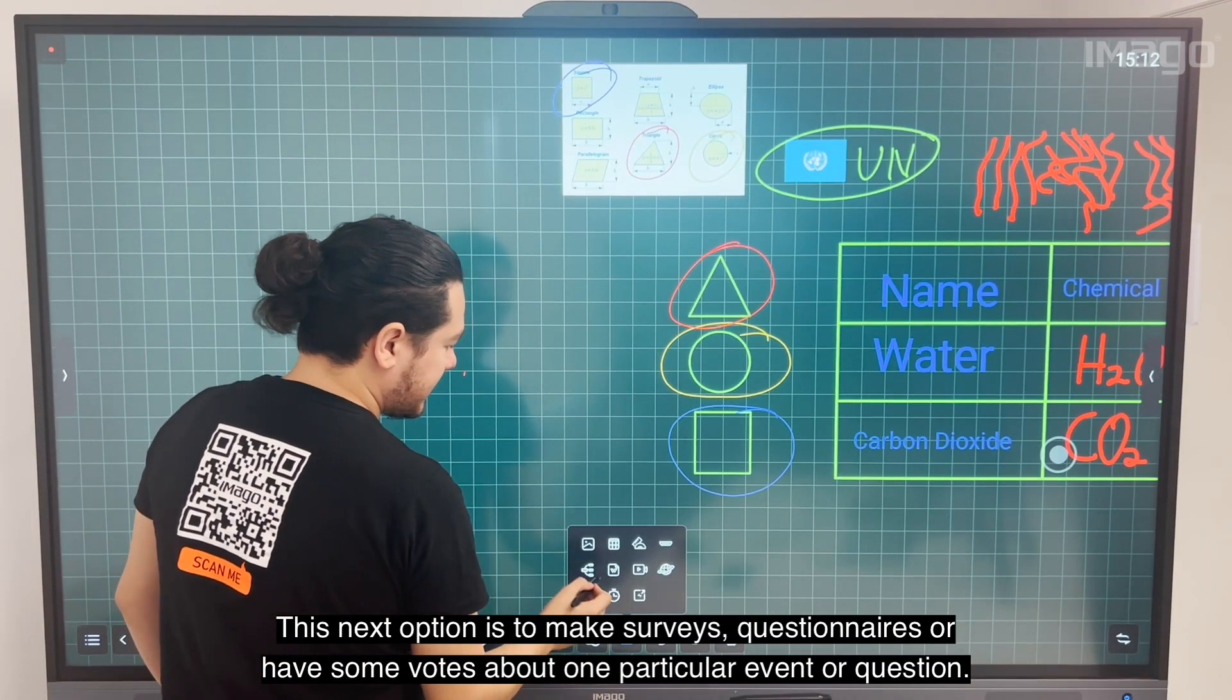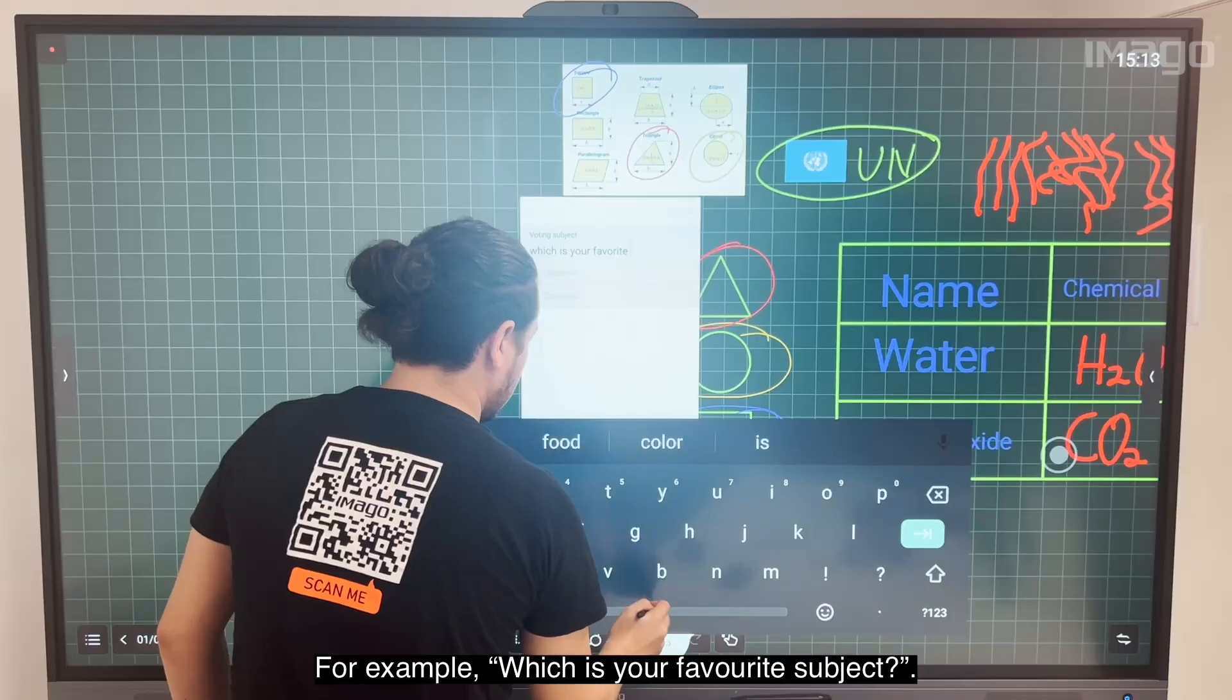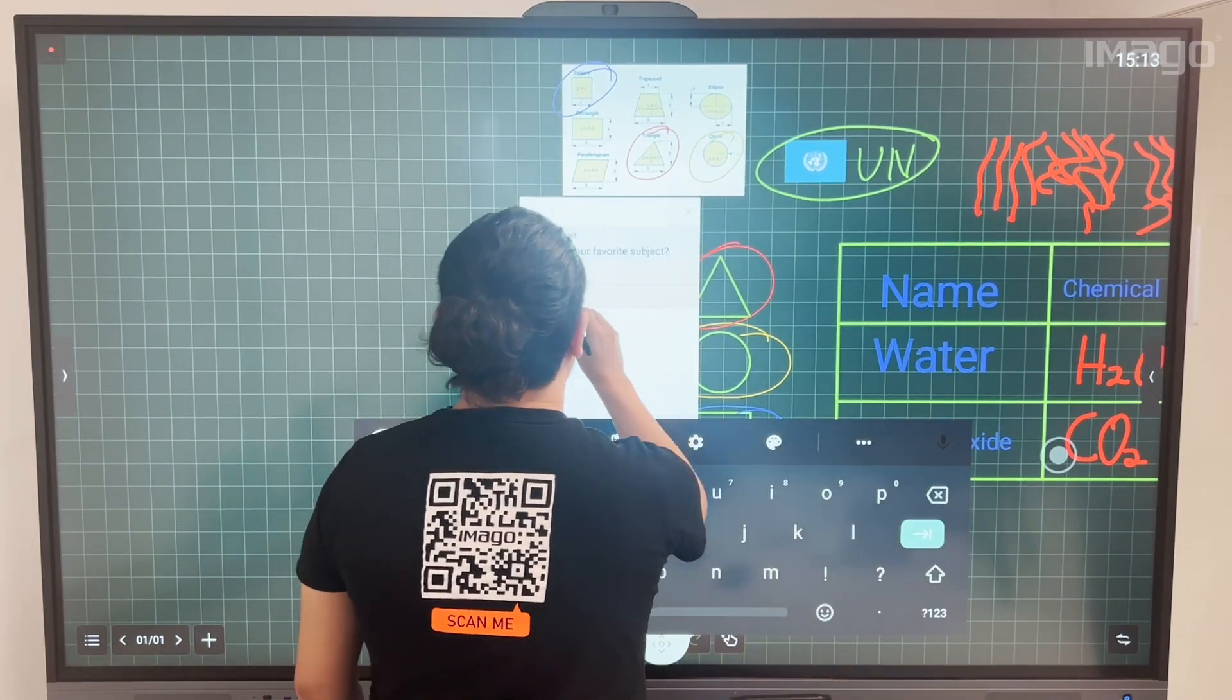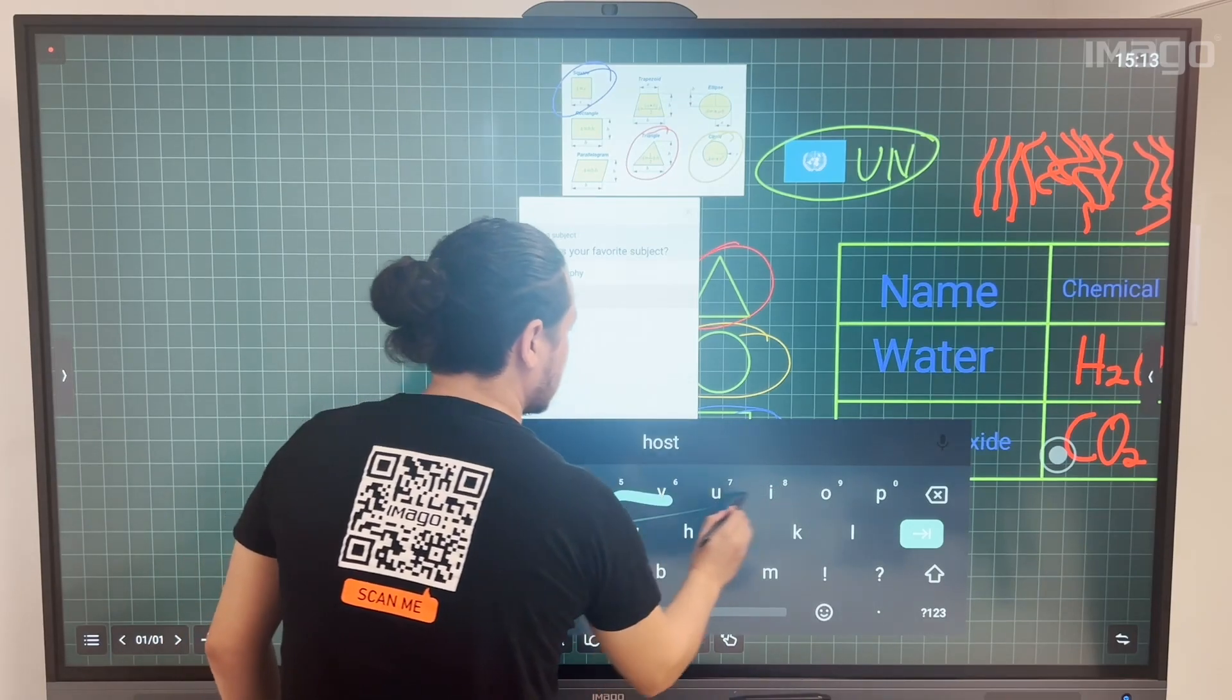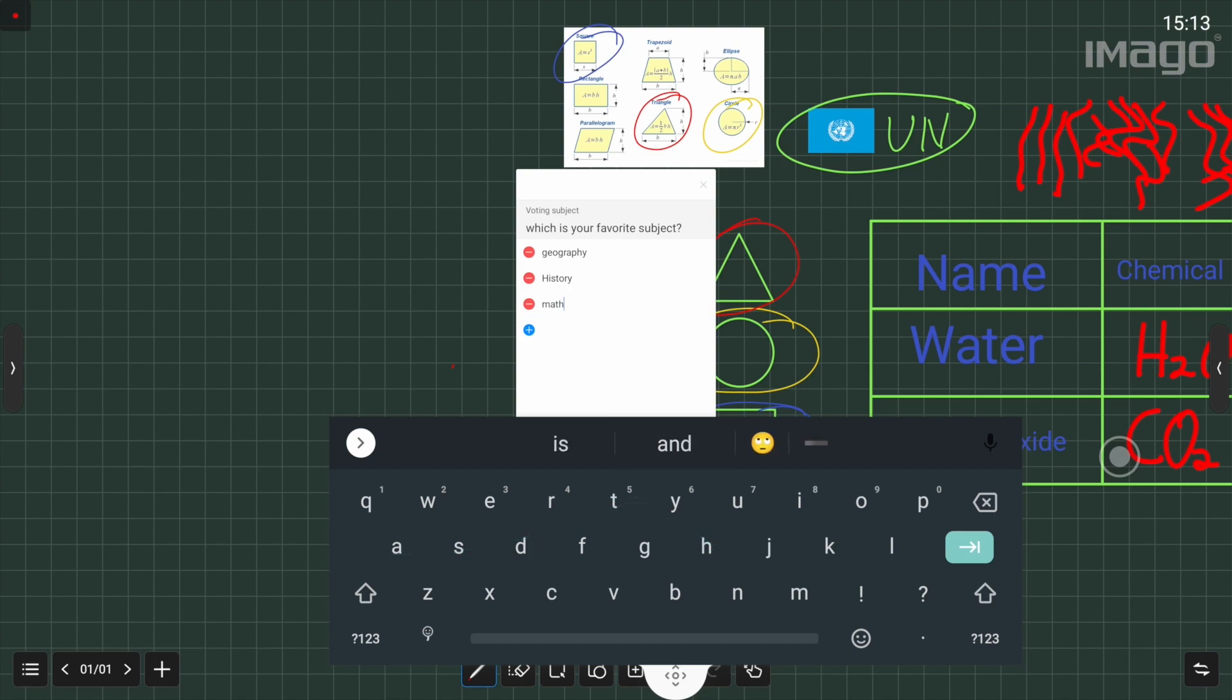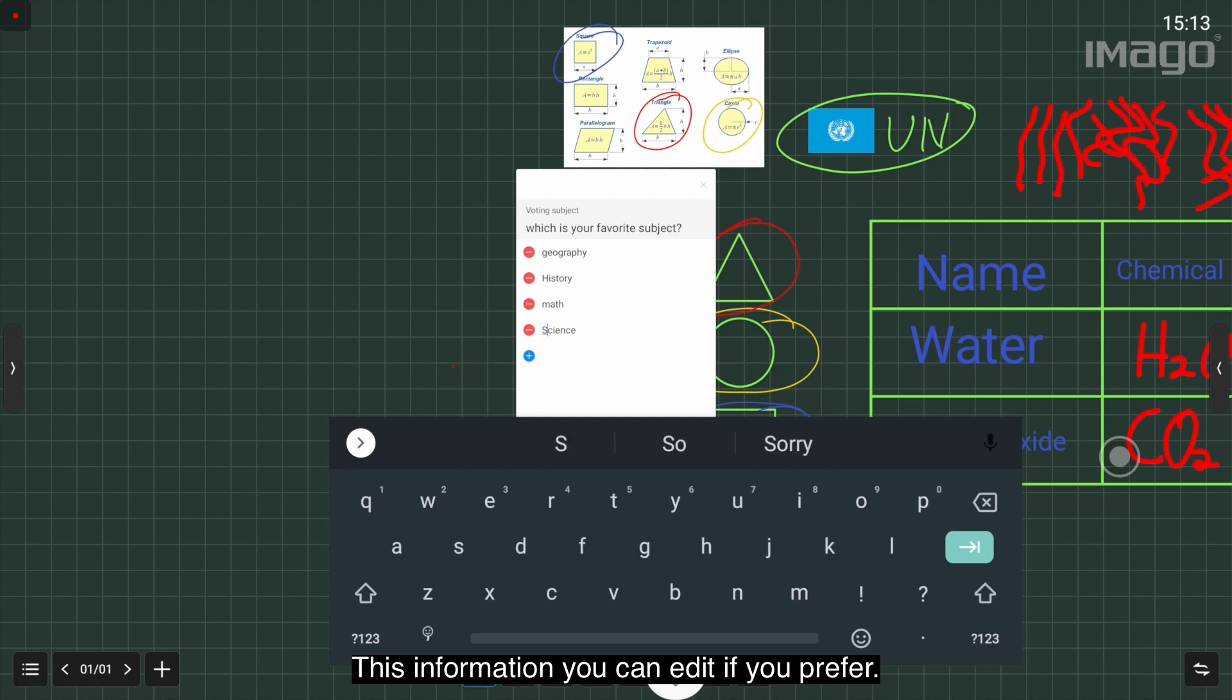This next option is to make surveys, questionnaires, or have some vote about one particular event or question. For example: Which is your favorite subject? Then you have Option 1, let's say Geography; Option 2, History; Option 3, Math; Option 4, Science.